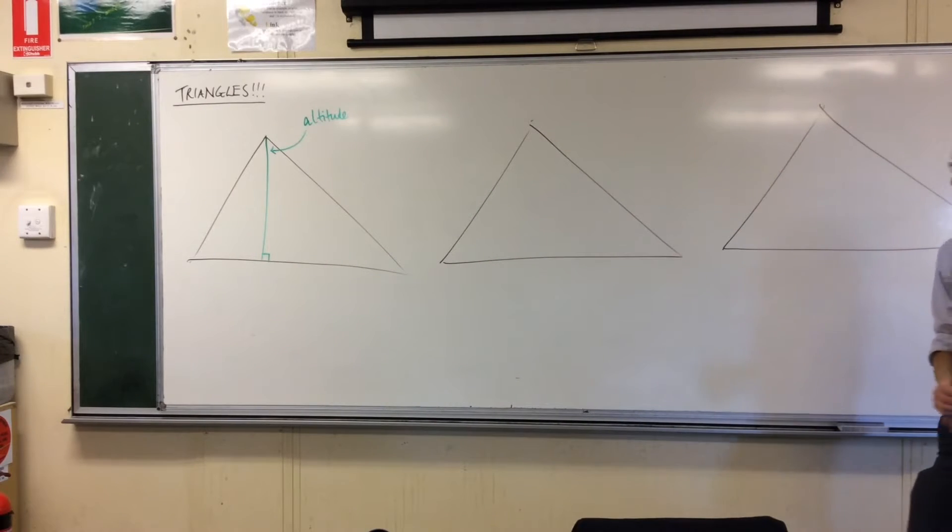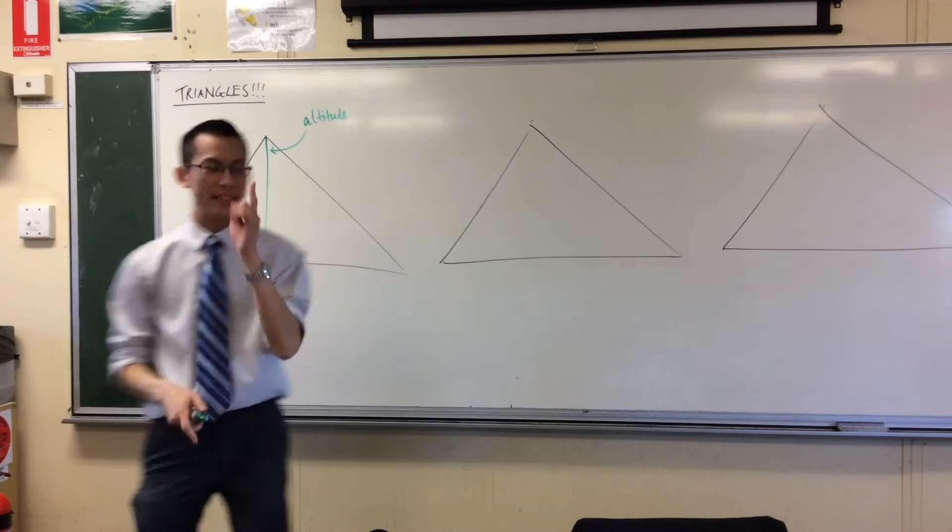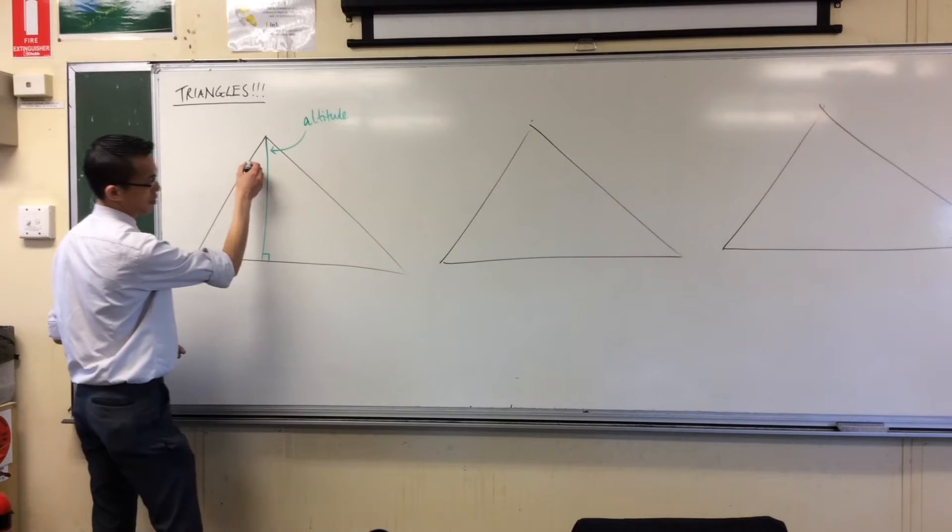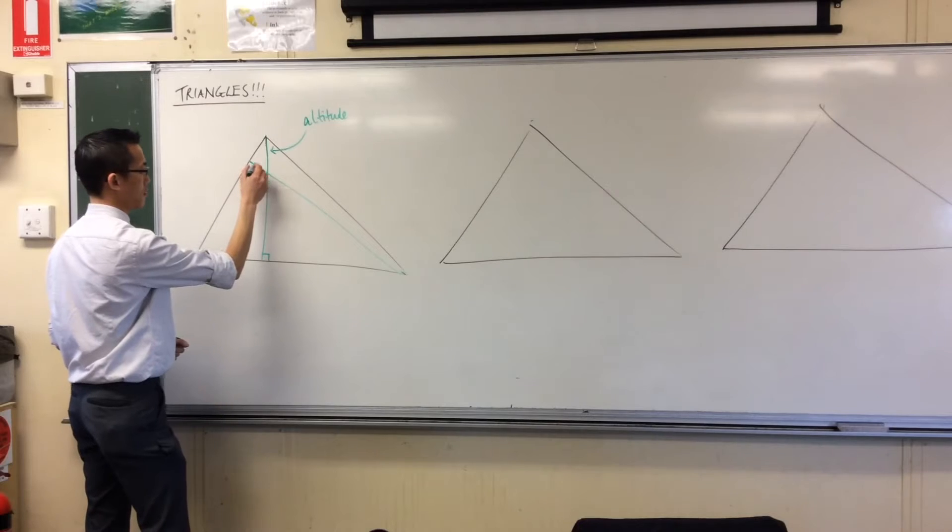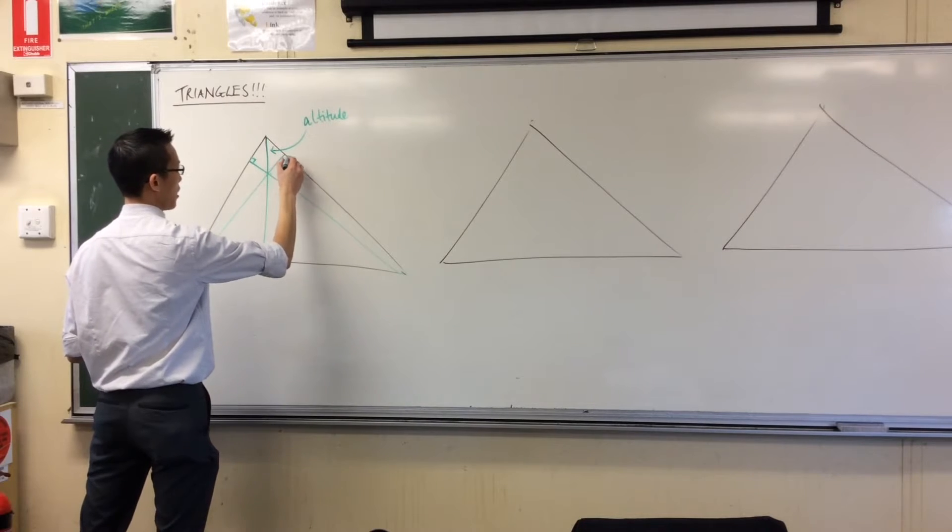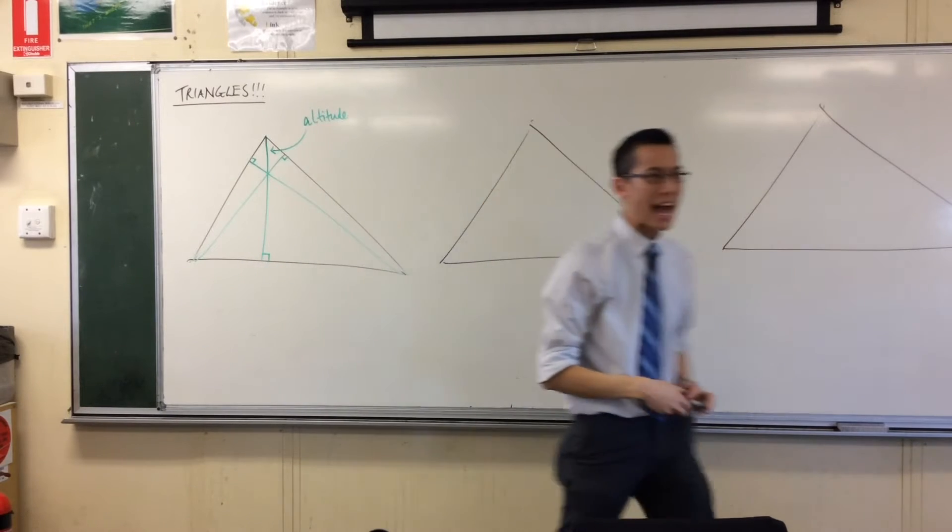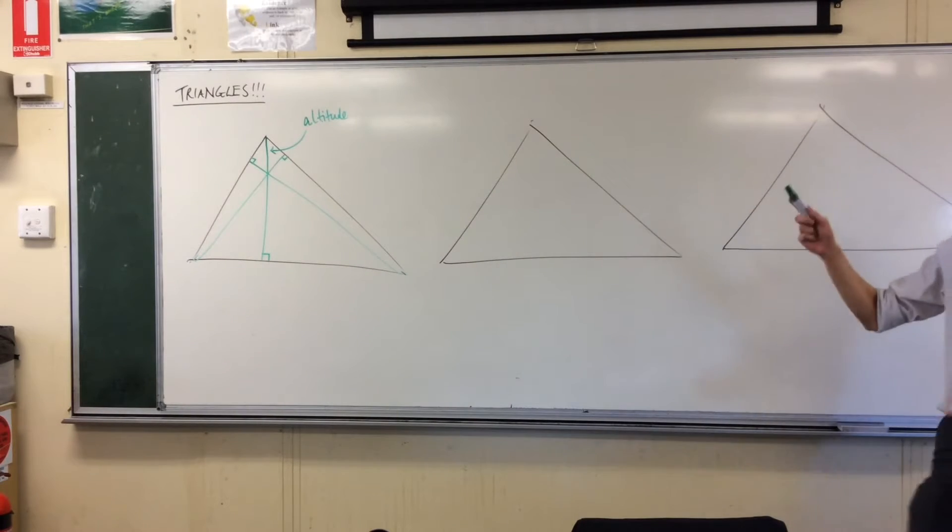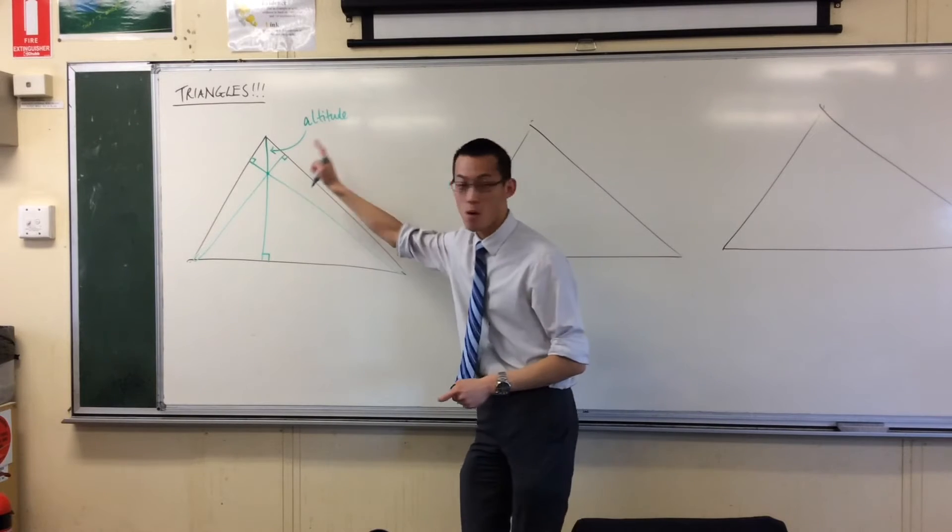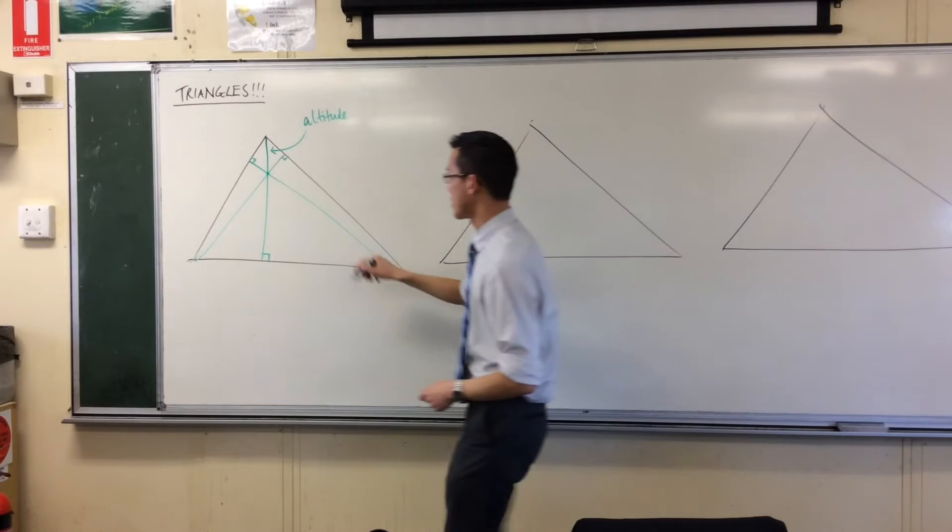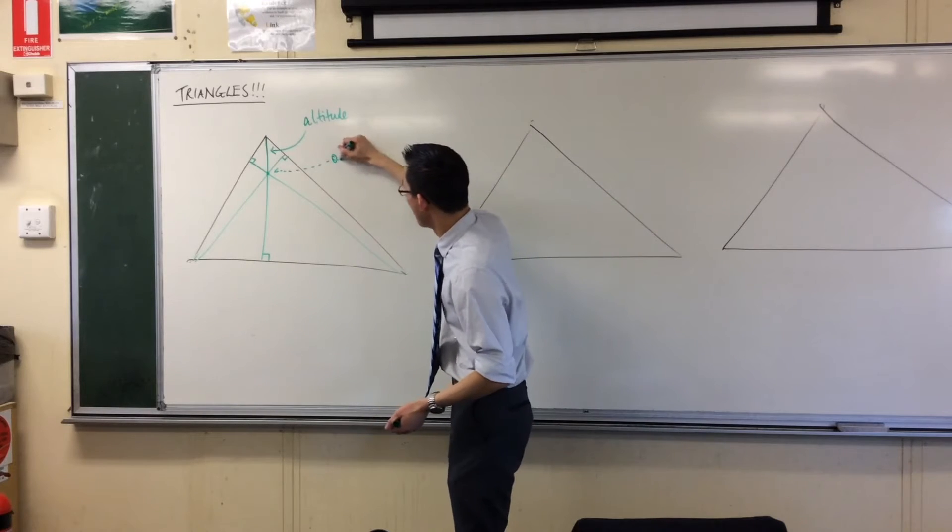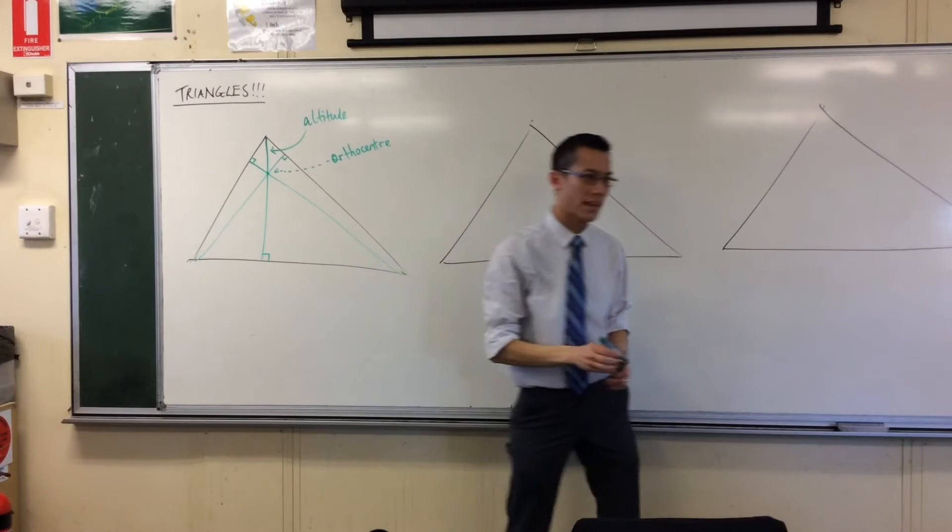Now the curious thing about all the altitudes is that they all, if you draw them, are concurrent. They're all concurrent at a single point. That single point there is called the orthocenter.